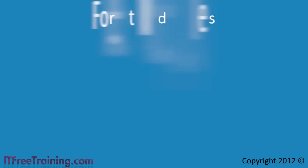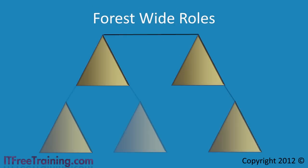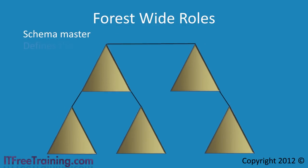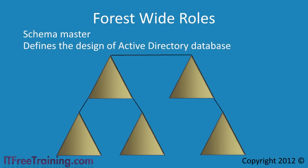I will start with the forest-wide roles, of which there are two. The first role is the schema master. The schema master contains the layout or structure of all the data in the Active Directory database. For example, a user account by default can include information such as the person's job title and phone numbers. If you wanted to add a person's pay grade, you could change the schema to include this information.